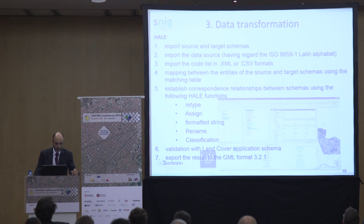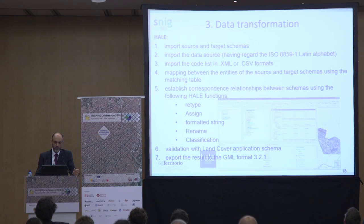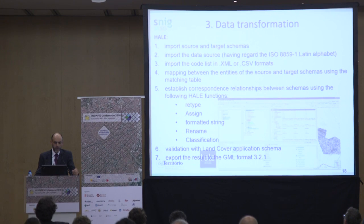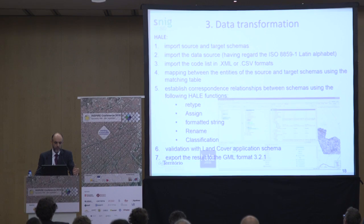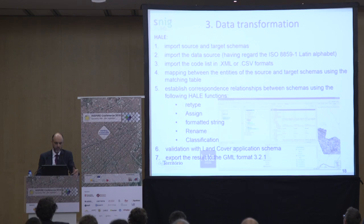The steps in HALE were: import the source and target schema; import the source data, taking into consideration the Latin alphabet because the classes have Portuguese names with special characters; import the code list using an XML or CSV format file; map the units using the matching table; and then use several HALE functions such as type, assign, rename, and classifications. Finally, we exported the result to a valid GML 3.2.1 file.